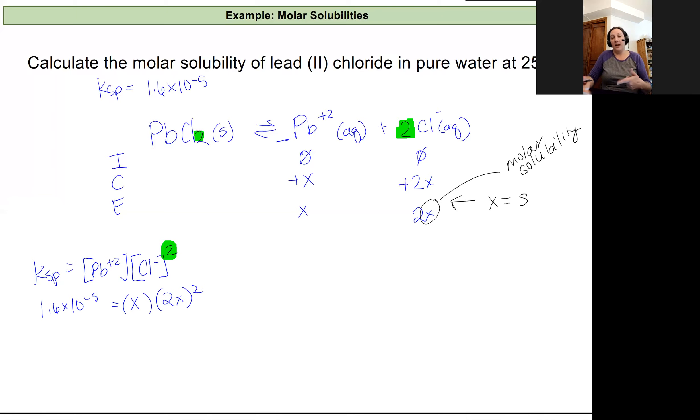So if I distribute this squared out, and I multiply this x by, or multiply my two variables there, I'm going to end up with 1.6 times 10 to the negative fifth is equal to 4x³. And so here, now all I have to do is solve for x.